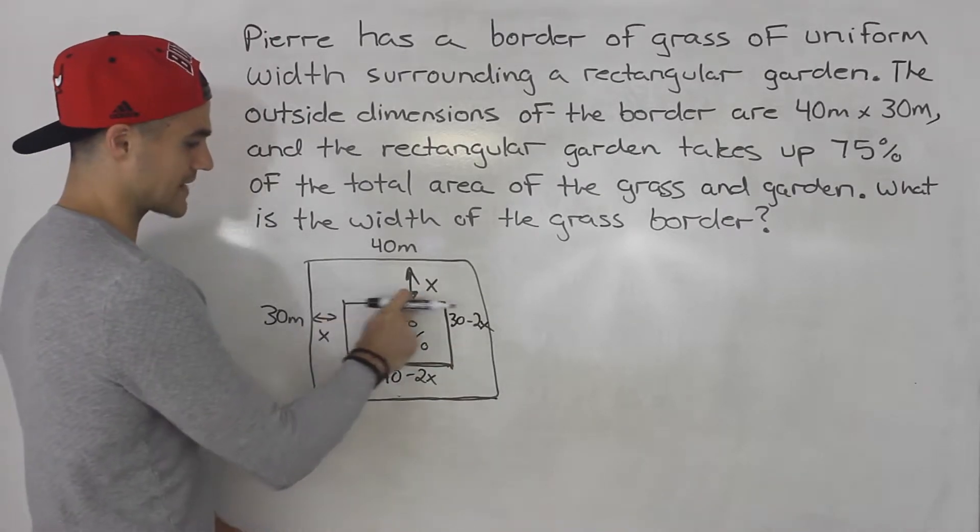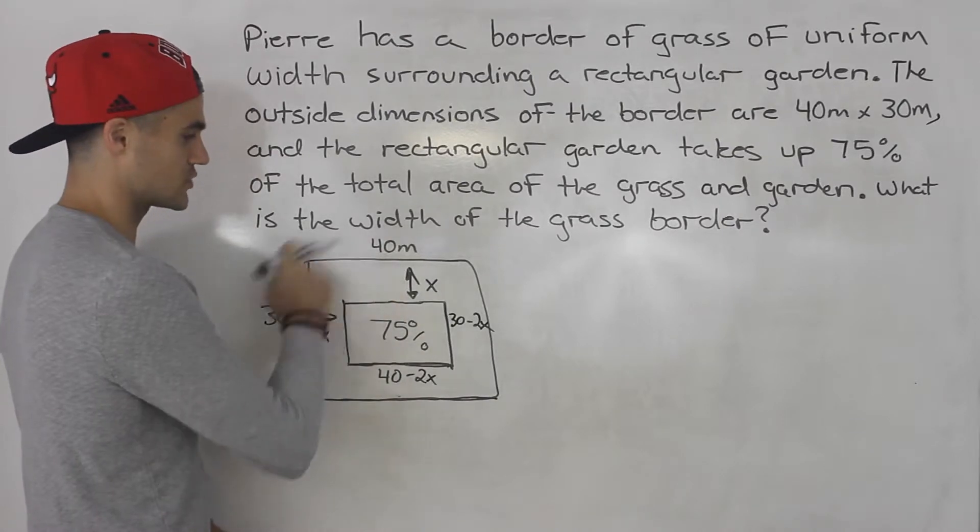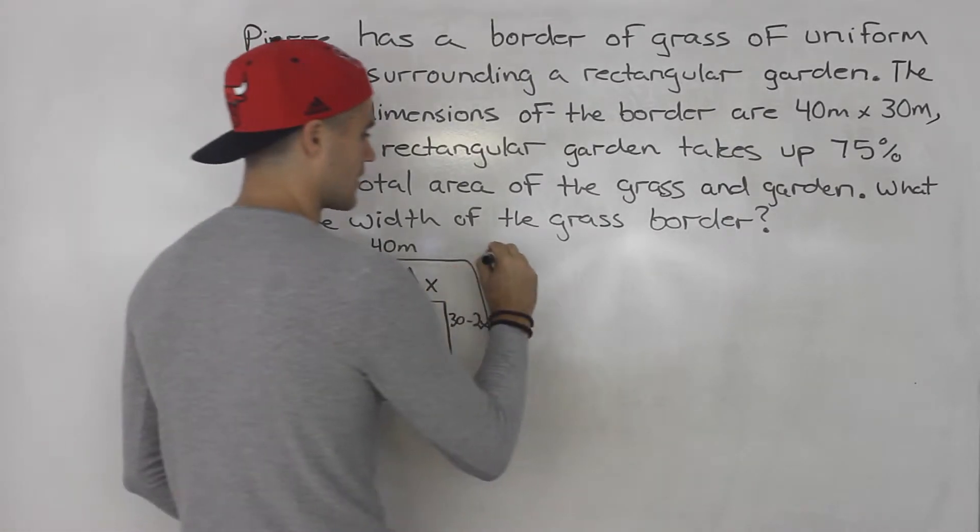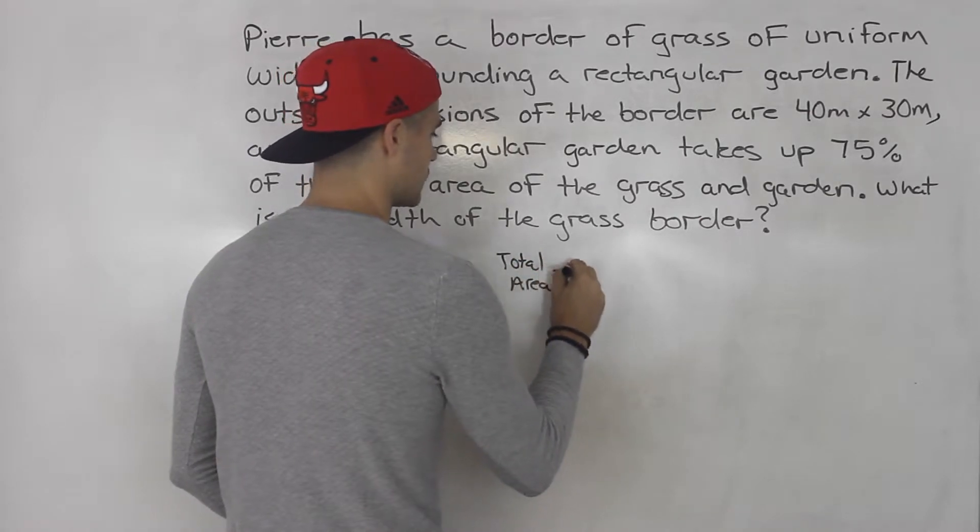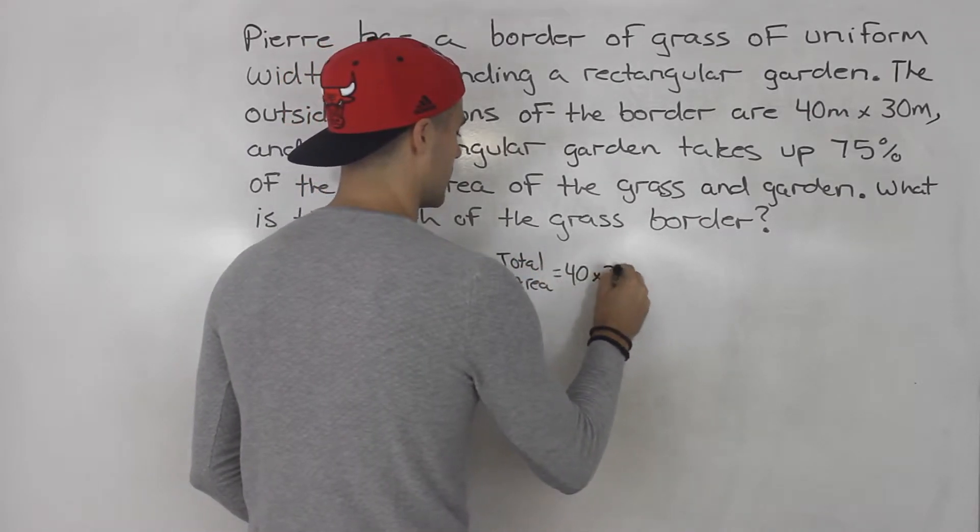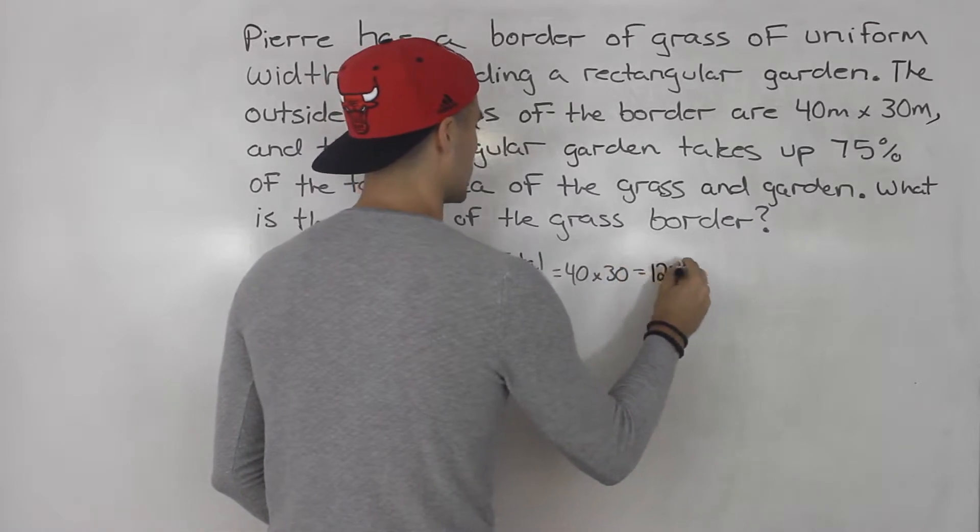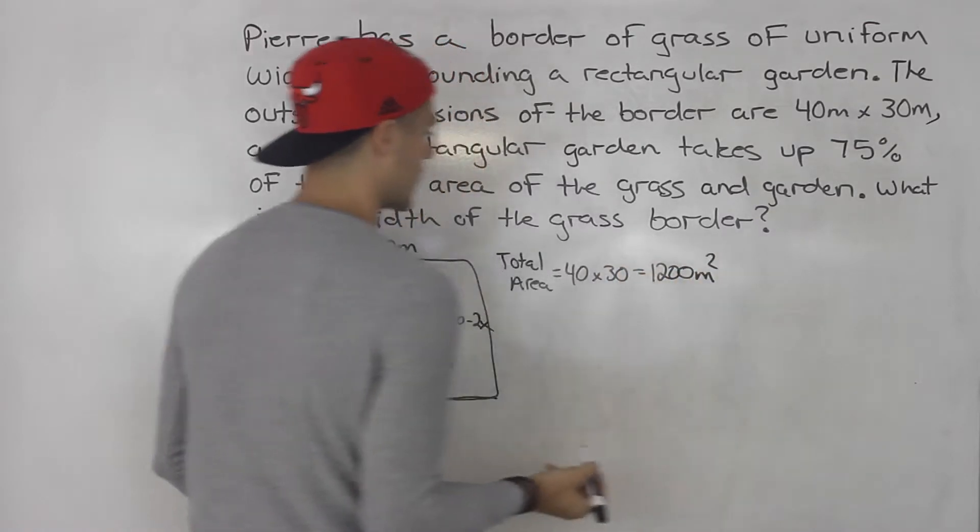And we also know that the rectangular garden has an area of 75% of the total area. So the total area is 40 by 30 which is 1200 meters squared.